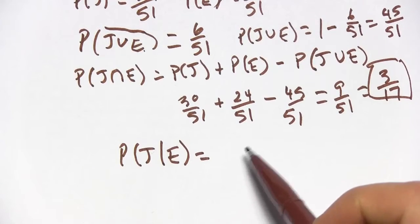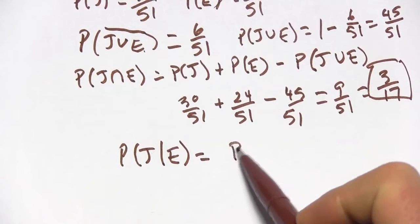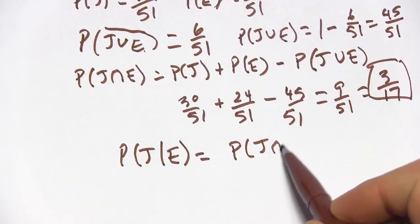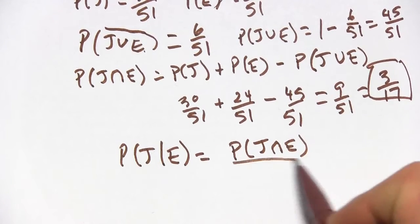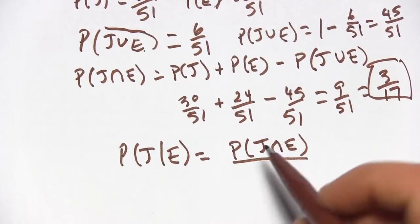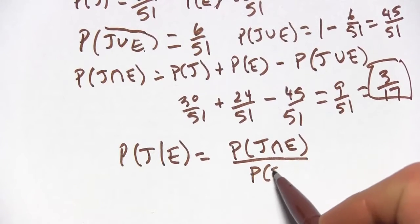The formula for that is the intersection, the probability of the intersection of those two things divided by the probability of the given. So P of E.